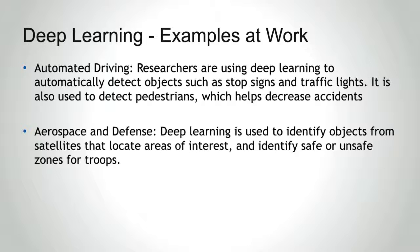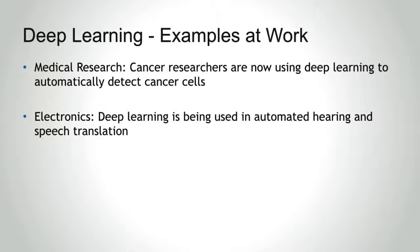Government agencies such as those in public safety and utilities have a particular need for deep learning, since they have multiple sources of data that can be mined for analysis. Analyzing sensor data, for example, identifies ways to increase efficiency and save money. Deep learning can also help governments detect fraud and minimize identity theft.